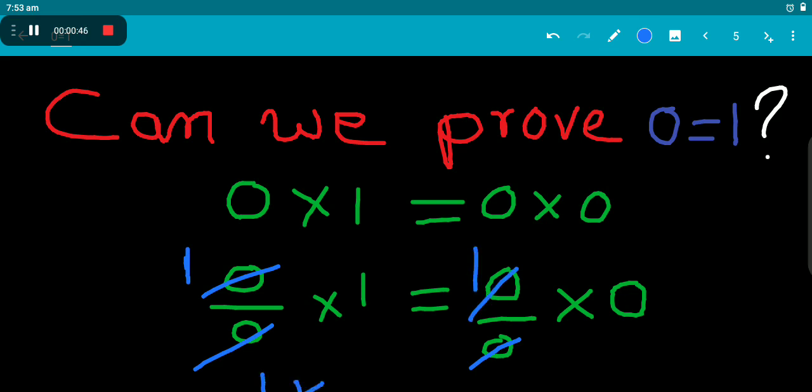So we have 1 into 1 equal to 1 into 0. That is 1 equal to 0.